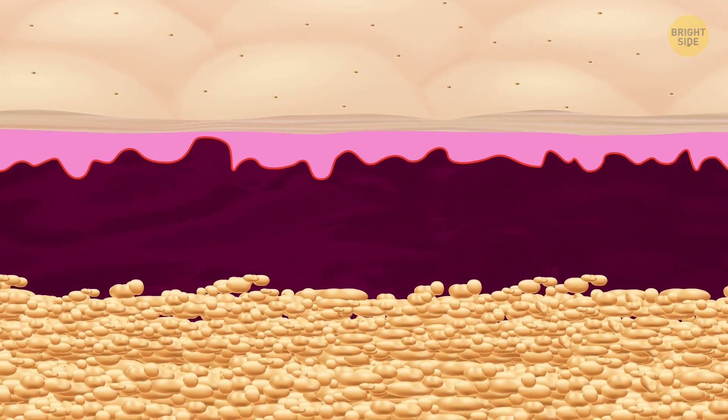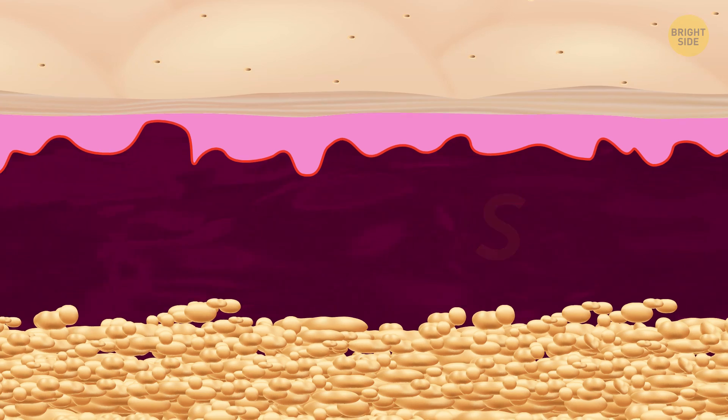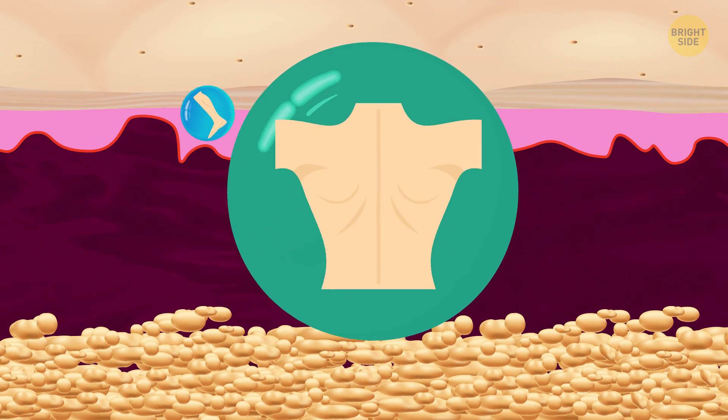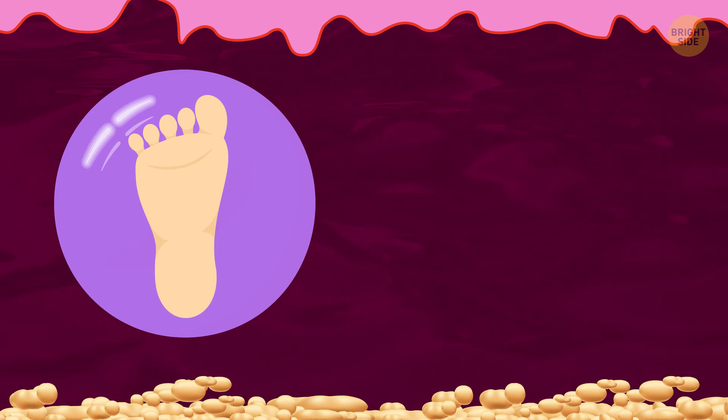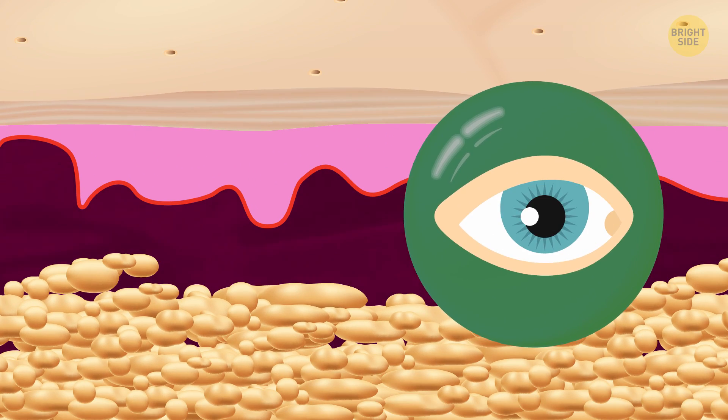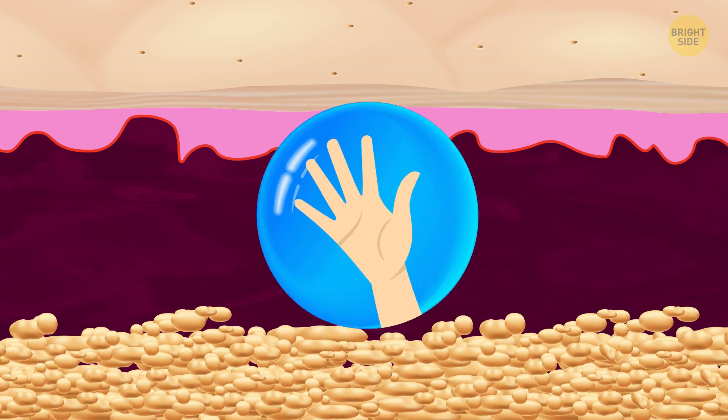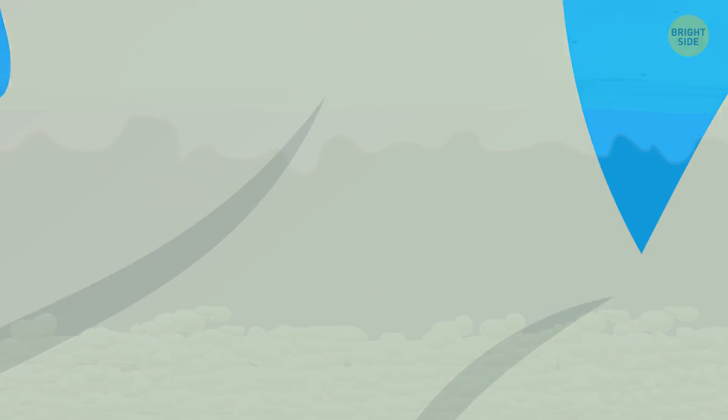We're going down to the dermis now, the second and thickest layer of skin. But the actual thickness depends on its location. The thickest skin is on your heels, the thinnest on your eyelids. We're traveling through skin on an arm, so we still have some traveling to do.